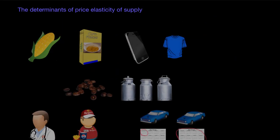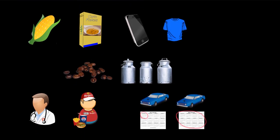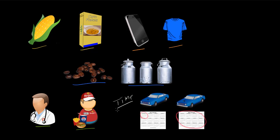We've now gone through five determinants of price elasticity of supply. First, primary commodities versus manufactured goods. Second, high-tech manufactured goods like smartphones compared to low-tech manufactured goods, which have a more elastic supply. Third, the ability to store inventories — coffee is more easily stored than raw milk, so producers of coffee are more responsive. Fourth, high-skilled versus low-skilled labor — the supply of doctors is far more inelastic than the supply of fast food workers. Finally, time: the supply of any good will be more elastic over time as producers can adjust their output in response to price changes.